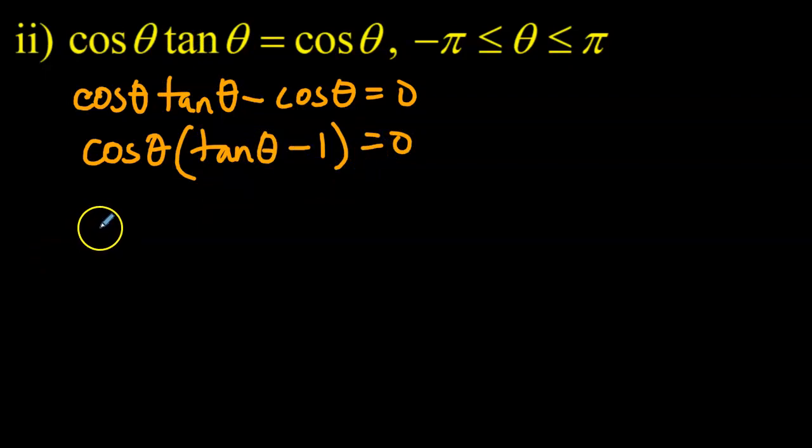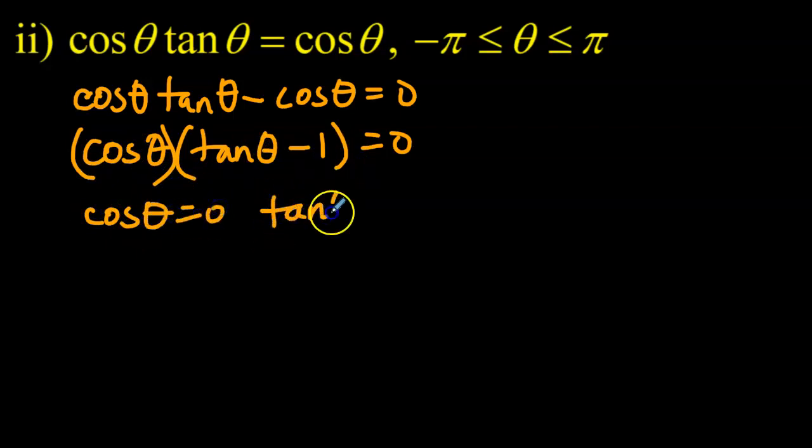This is great. This is like two factors of a quadratic equation. And so cos θ times (tan θ - 1) equals zero. So when does that happen? When cos θ is equal to zero, when tan θ is equal to one. If this is zero, zero times whatever is zero. If tan θ is one, one minus one is zero, times anything else is zero.